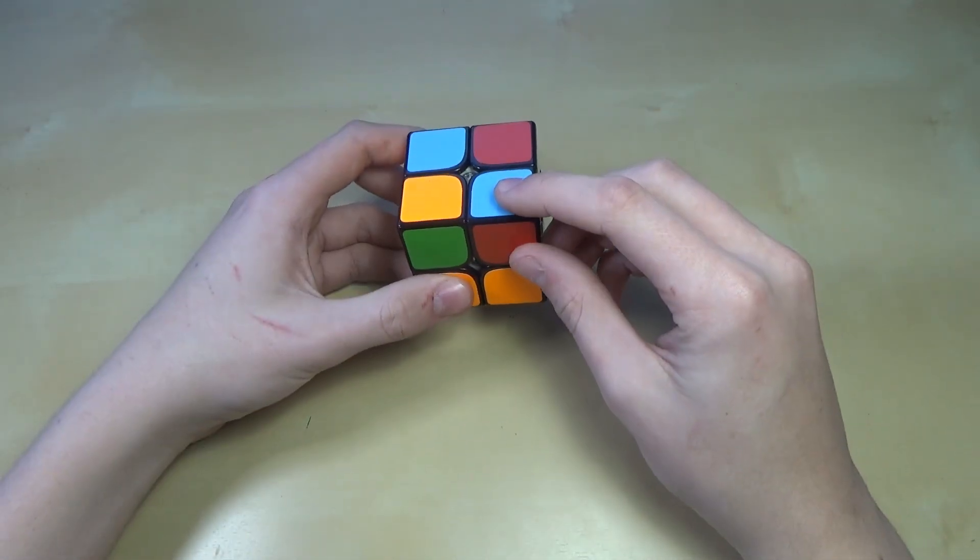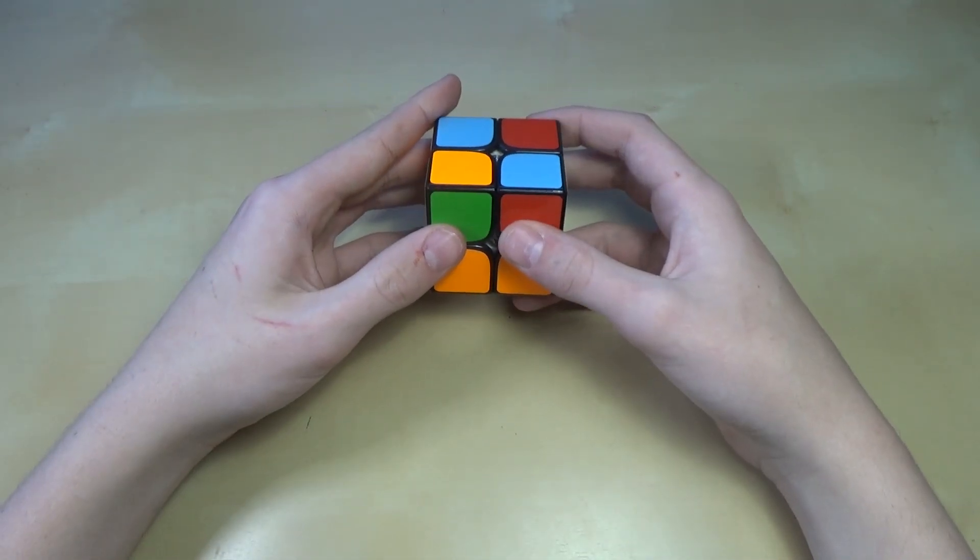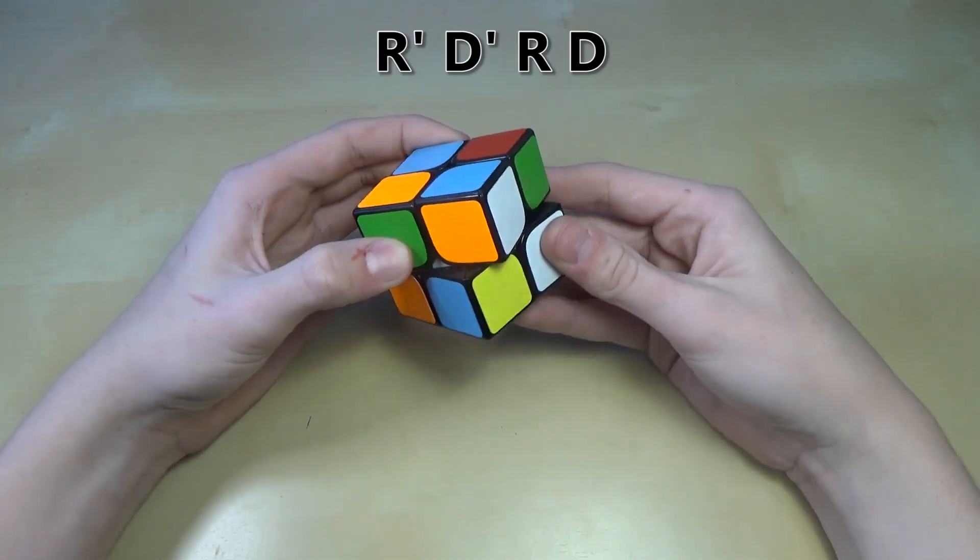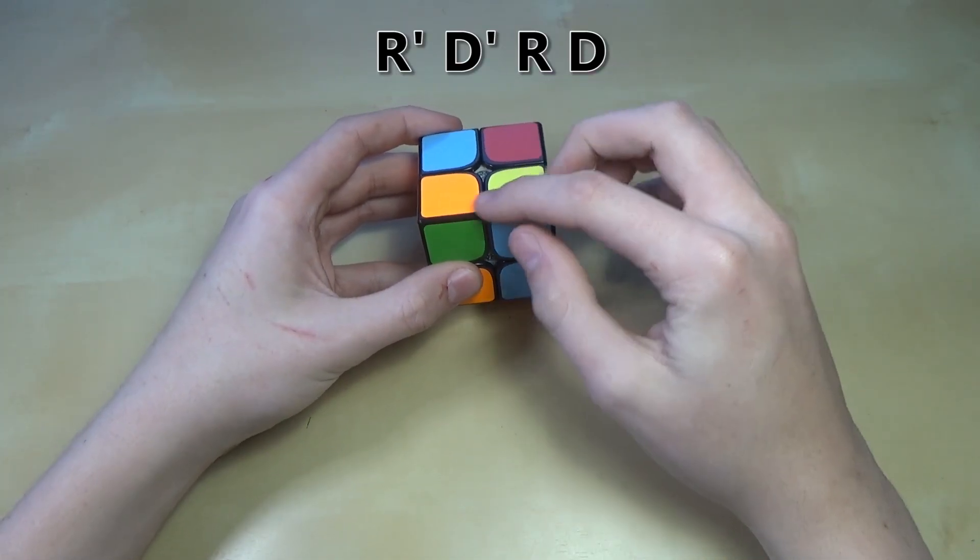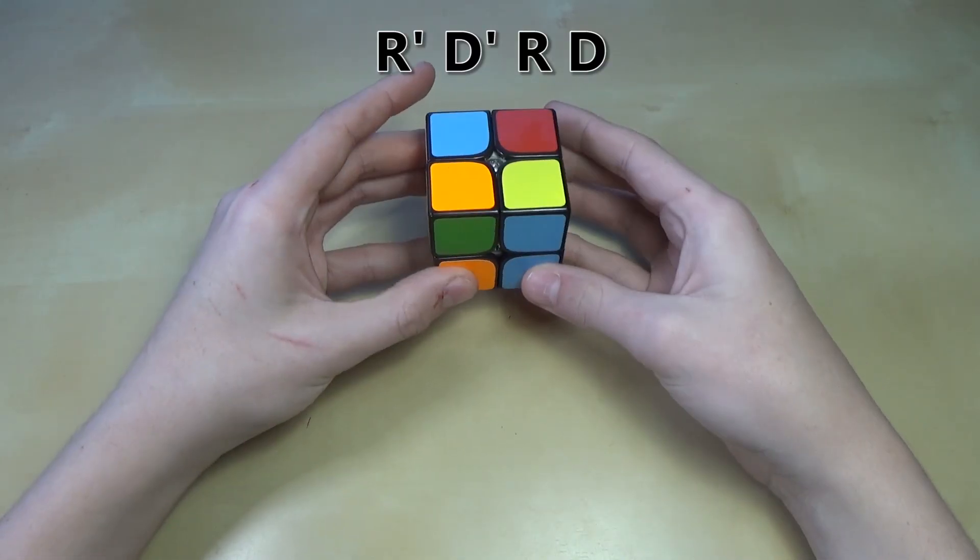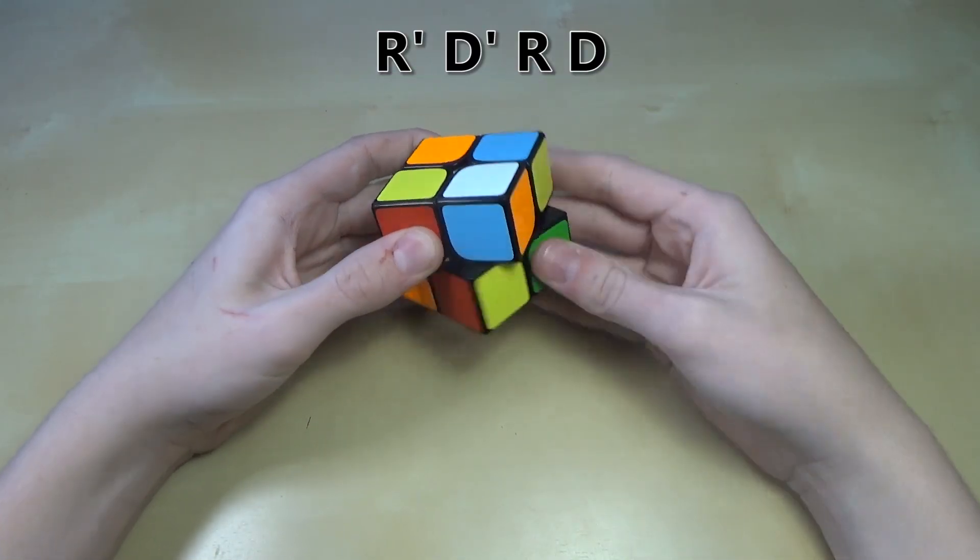And so you see, we'll start with this one. And we'll do that algorithm once. And again, and we'll keep doing it until it gets aligned like this. So you see, we have yellow on top. And now we can just do a U move, and continue with the next piece.